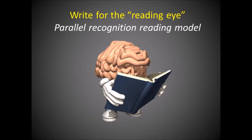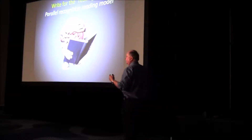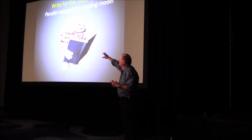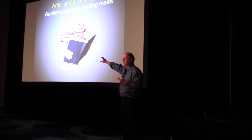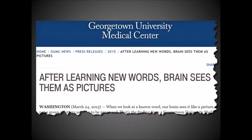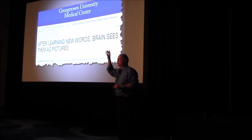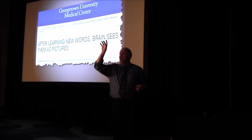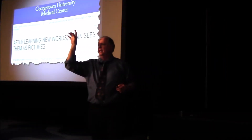We're going to talk about writing for the reading eye — the perceptual process of reading. The most popular model is called the parallel recognition reading model. It says you don't read words a letter at a time; you read whole words, whole phrases at a time. This is really fascinating. When you learn a word — and you know thousands, tens of thousands, hundreds of thousands of words — you don't see them as words anymore. You see them as pictures. You are reading pictures.